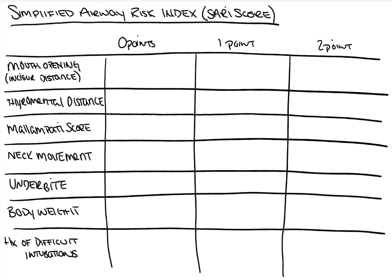This score is a multi-variable calculator for determining the difficulty of tracheal intubation. It is scored from 0 to 12, with a score of at least 4 being indicative of difficult intubation. The higher the score, the more difficult the predicted airway. It's scored from 7 different categories, each worth 0 to 2 points, as we see here on our chart.